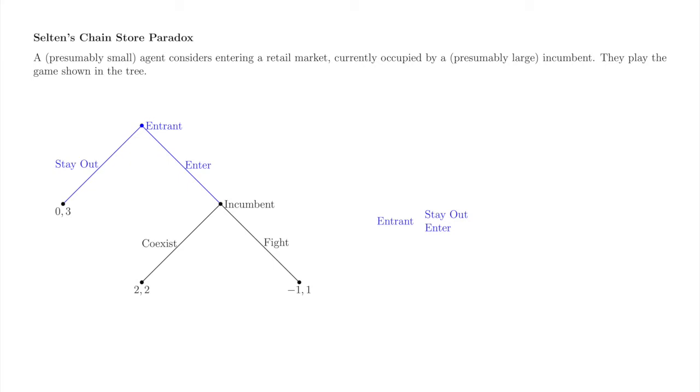The entrant has two actions in its one action space: Stay out and enter. Let's make the entrant our row player. The incumbent also has two actions in its one action space, coexist and fight. Let's make the incumbent our column player.